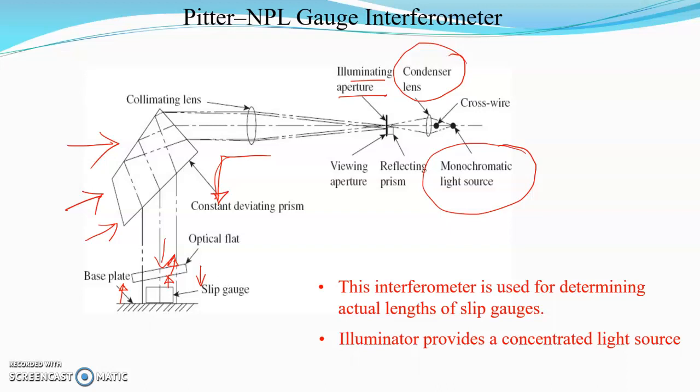These three rays combine to form different patterns and are redirected through the optical system again. The path is slightly deviated because of the taper or angle of the optical flat. The light is then incident on the viewing aperture, and the fringe pattern appears there.